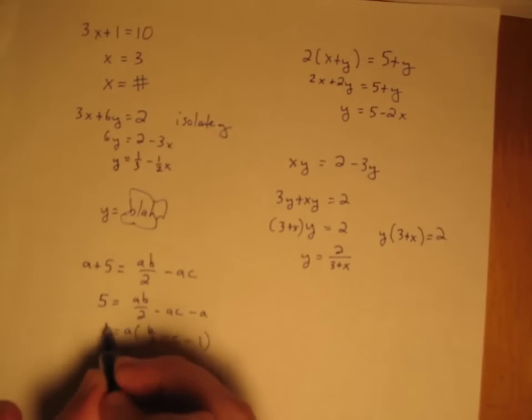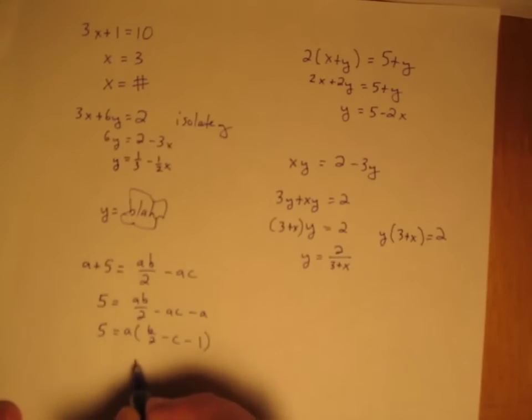Equals 5. And finally, a equals 5 over that mass, b over 2 minus c minus 1.